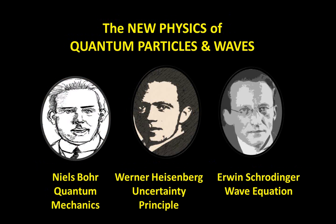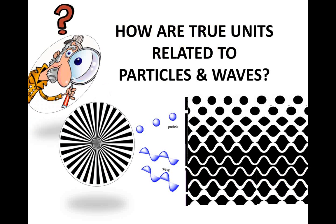The work of Bohr, Heisenberg, and Schrödinger led to the discovery that matter, energy, and the consciousness of the observer are intimately related and entangled at the quantum level. With these discoveries, particle physics has to be redefined. How are true units related to particles and waves?